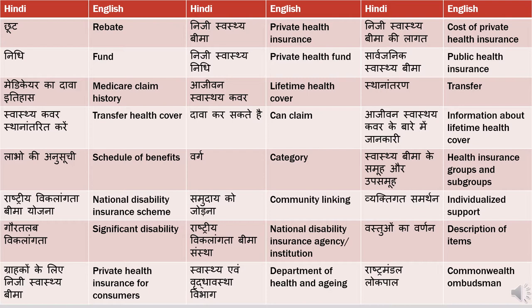'Labo ki anusuchi' means schedule of benefits — 'anusuchi' is schedule and 'labo' is benefits. 'Work category' — you can also say 'shreni' for category, which is not wrong. So 'shreni' or 'work' both are acceptable translations for category.